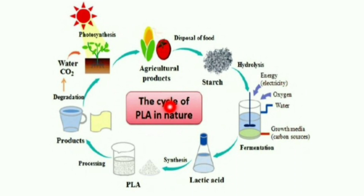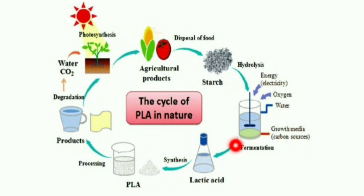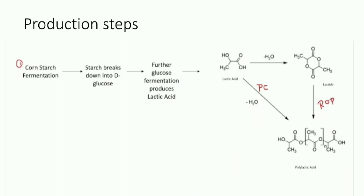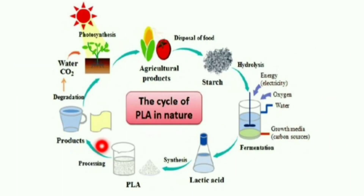This is the cycle of PLA in nature. First, the fermentation process converts starch into D-glucose, and then after fermentation it converts to lactic acid. After lactic acid, we synthesize it to get PLA. This synthesis is done by two basic steps: forming lactide as an intermediate product, and polymer condensation forming polylactic acid.